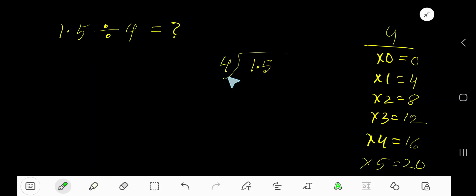1.5 divided by 4. Here, 4 is the divisor, so we need the multiplication table of 4: 4 times 0 is 0, 4 times 1 is 4, 4 times 2 is 8, 4 times 3 is 12, 4 times 4 is 16, 4 times 5 is 20.